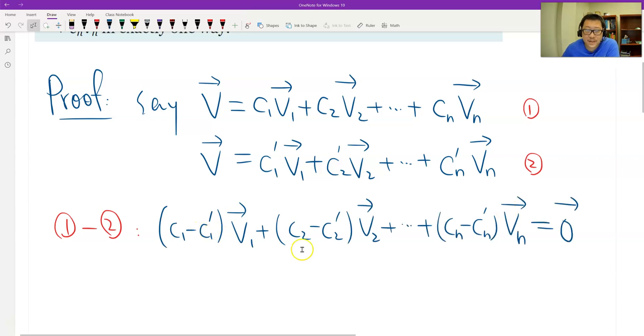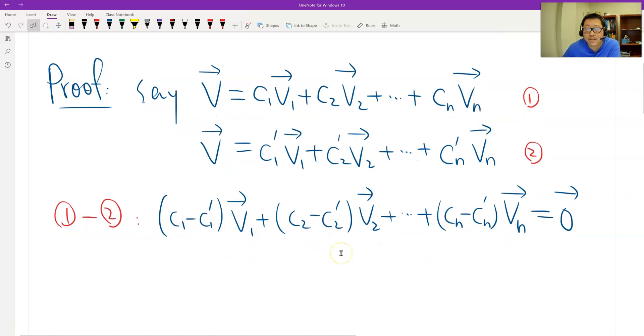So this means the linear combination, a kind of linear combination of v1 to vn is zero. And this is the coefficient that we already combined. But we know v1, v2 to vn is a basis, right? And the basis should be linearly independent.